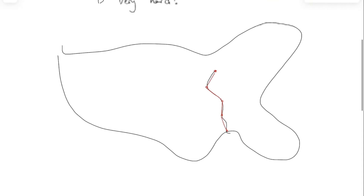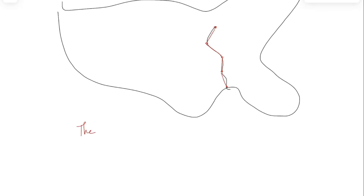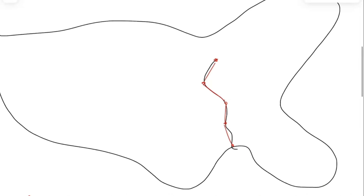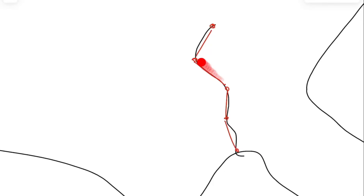So this red estimation — the straight lines always give an underestimate. Because even the parts which look straight at the scale of the United States, being very big, in real life they're not actually straight. If you were to zoom in on a real map, you would see what looks curvy here is actually in reality more curvy than it seems on this picture.